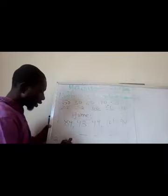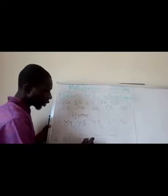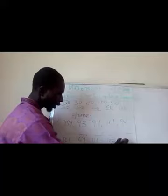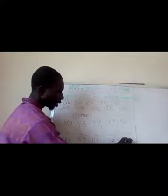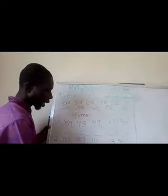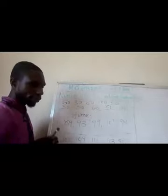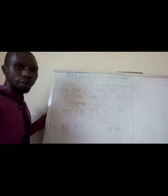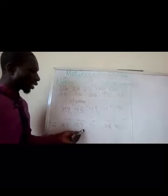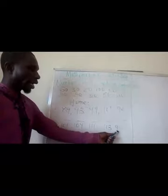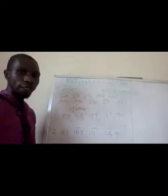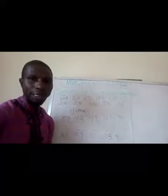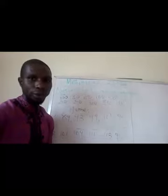Question two: arrange these numbers — 101, 109, 111, 113, and 95 — according to their magnitude. The numbers are on the board; you can see them: 101, 109, 111, 113, 95. Copy them and arrange them accordingly. I will collect them and mark them. If you have any questions, drop them in the forum section on this portal and I will get back to you.